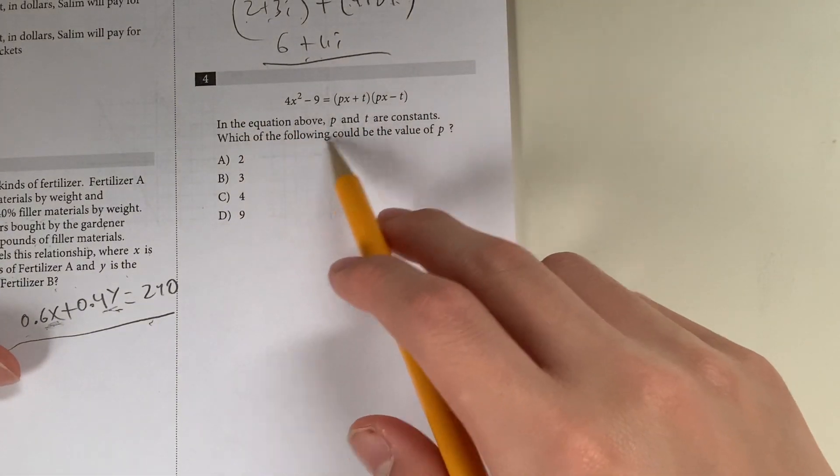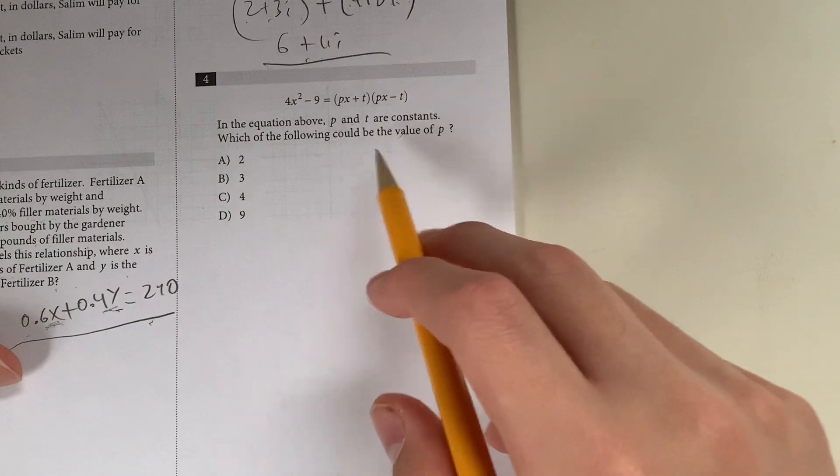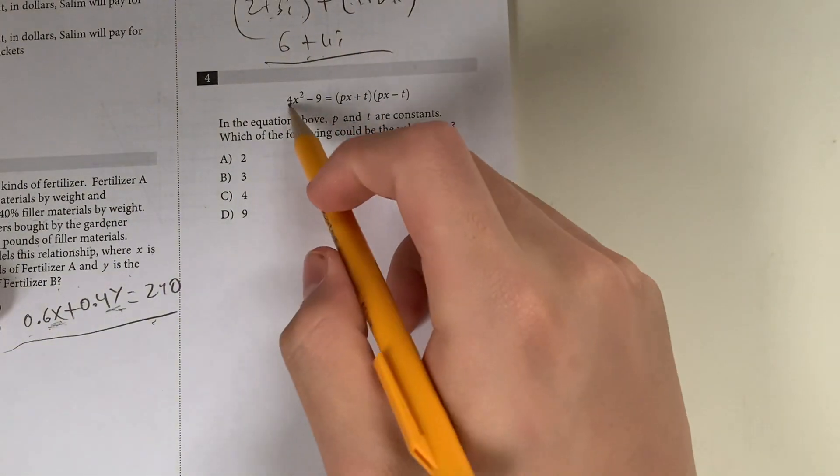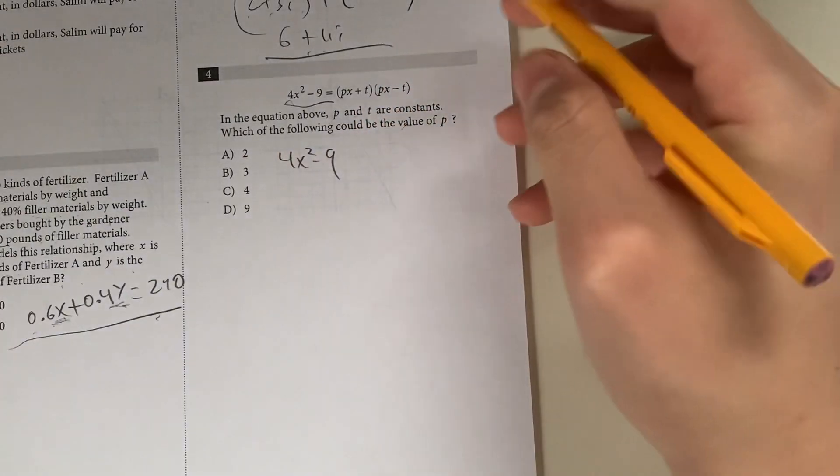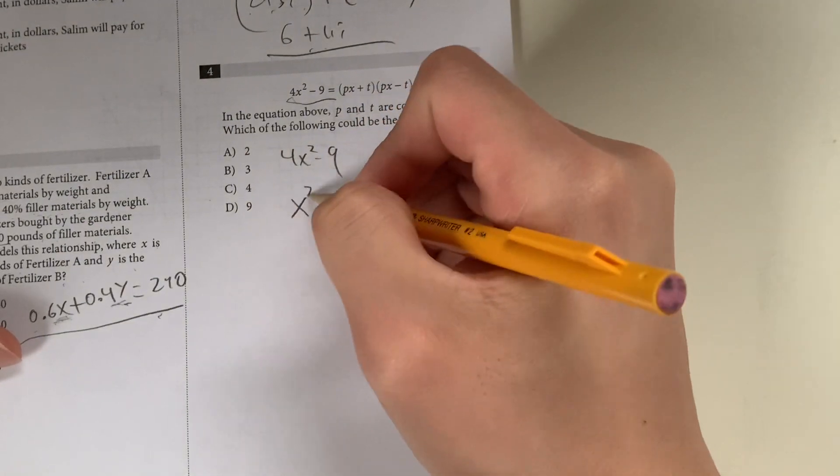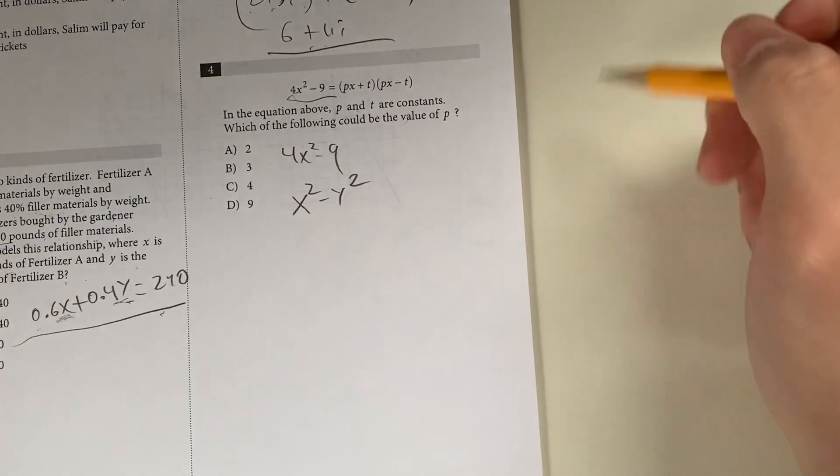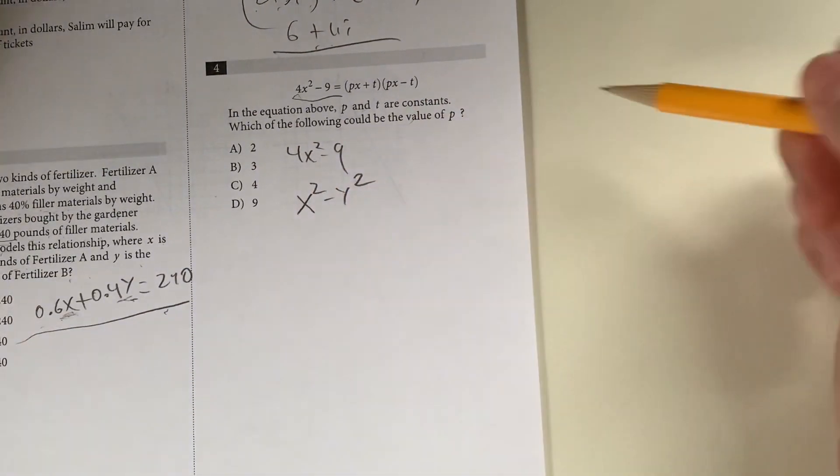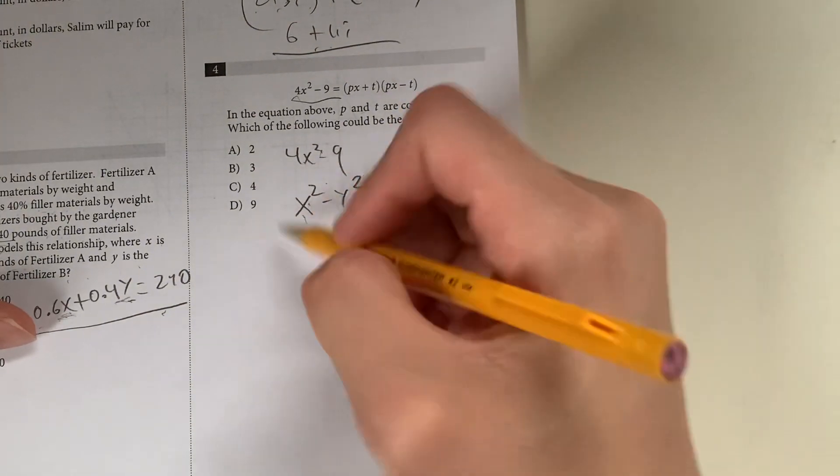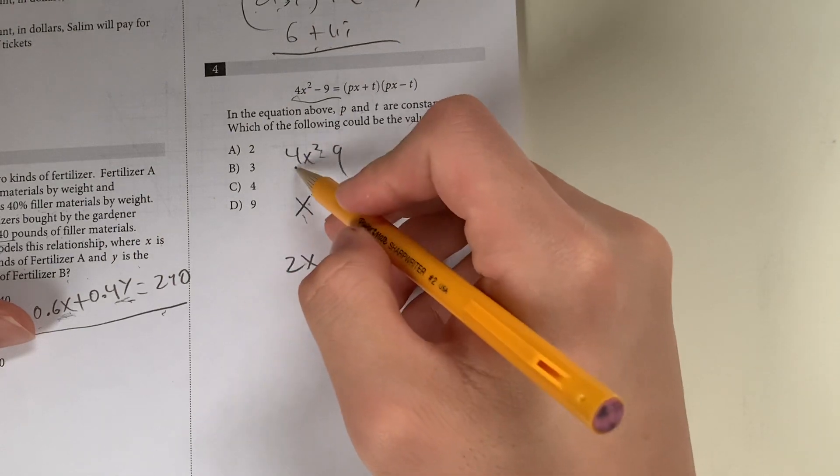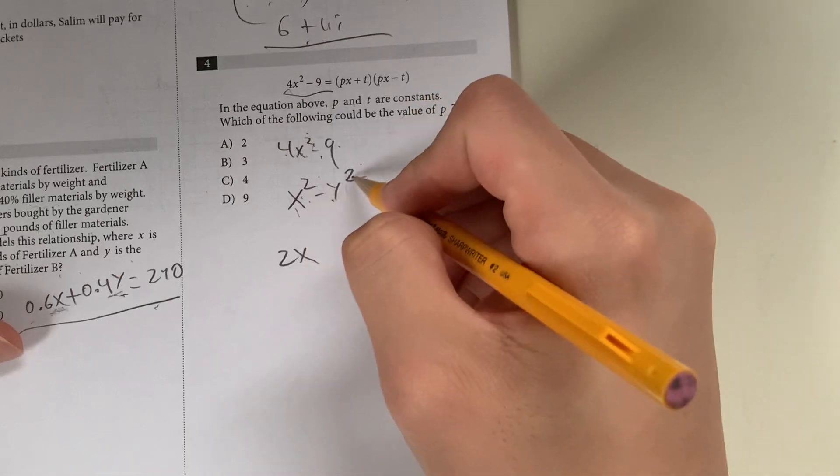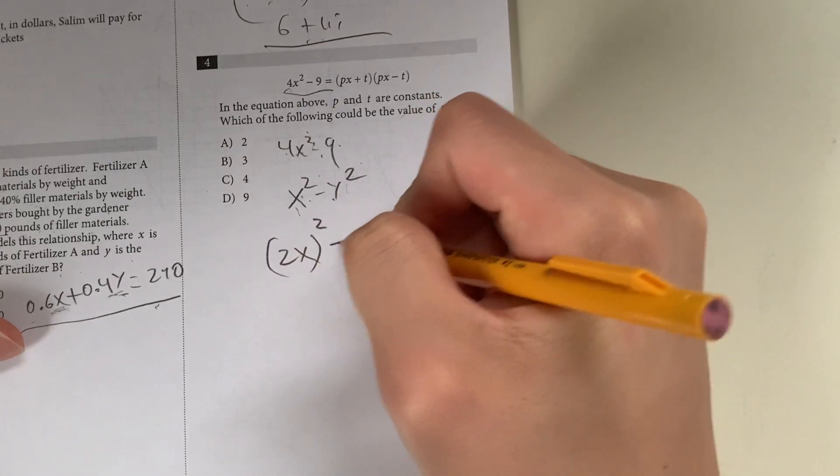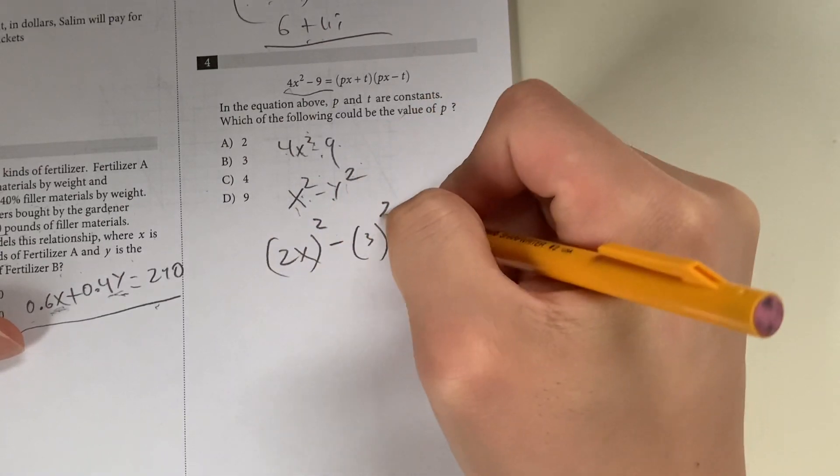Question 4. In the equation above, p and c are constants. Which of the following could be the value of p? Looking at this, you have to be able to recognize 4x squared minus 9. This is simply the difference of squares, x squared minus y squared. What is 4x squared as x squared? It's going to be 2x. 2x times 2x is 4x squared, and 9 is 3 squared.